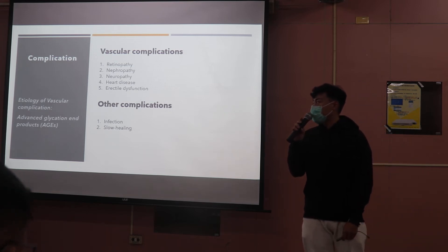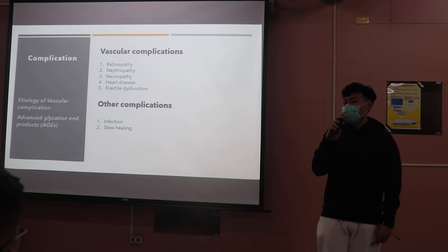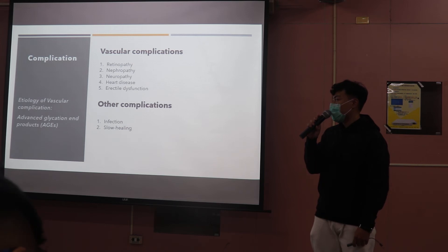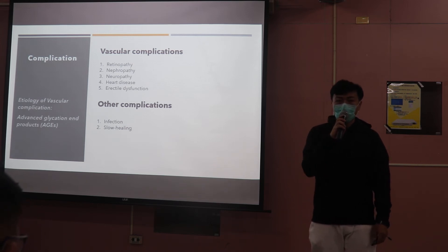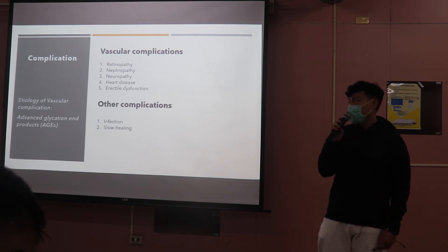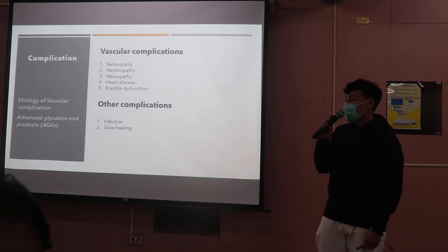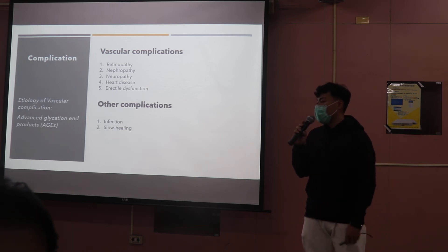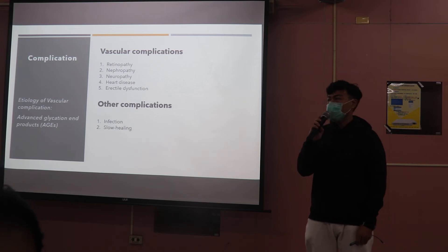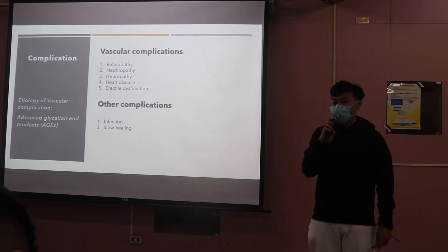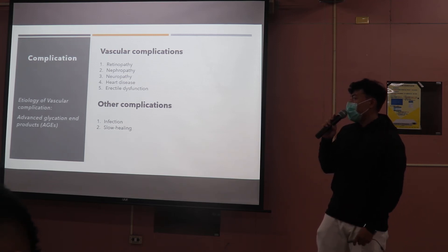The reason why vascular complications occur is because when you get diabetes, advanced glycation end products make your vessels lose flexibility and cause chronic inflammation. This can happen in small vessels, so you will have more damage to organs with smaller vessels — like your eyes, your kidneys, and your nerves.